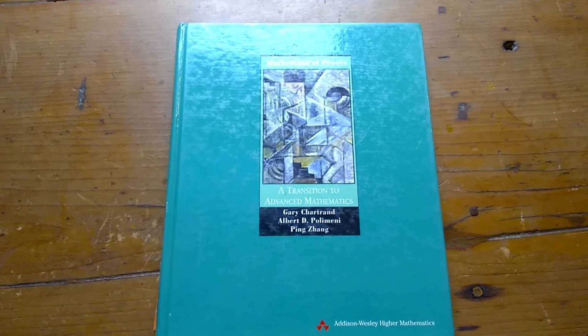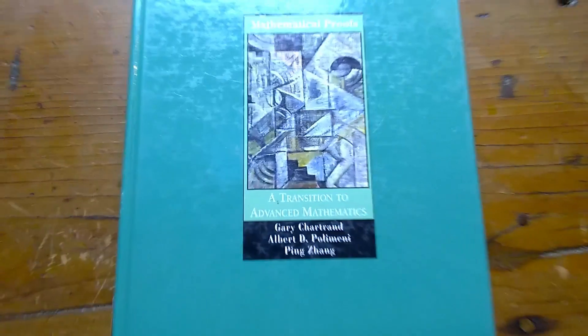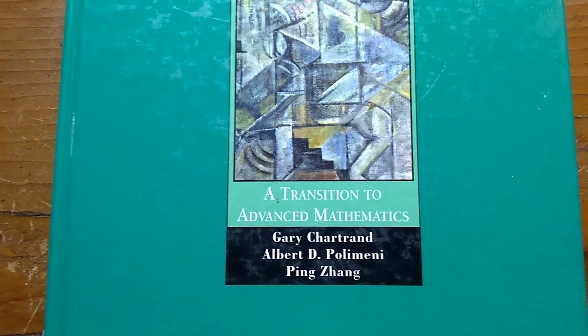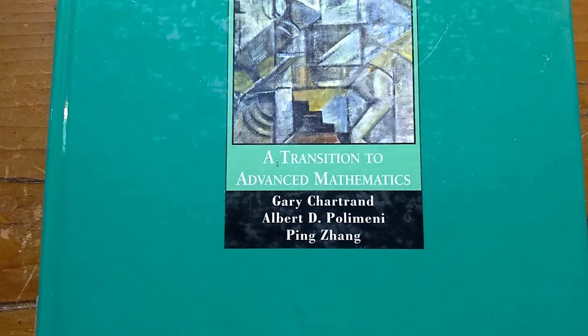Hi everyone, in this video we're going to discuss a book on writing mathematical proofs. The book is called A Transition to Advanced Mathematics, and this is the Chartrand, Polimeni, and Zhang book.